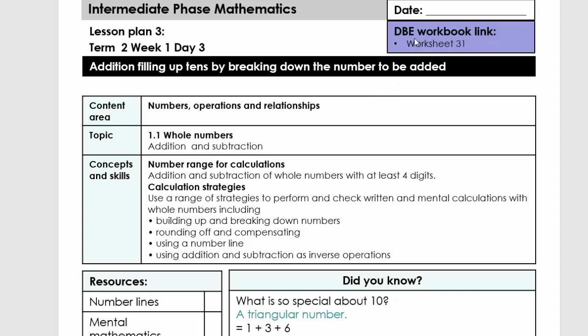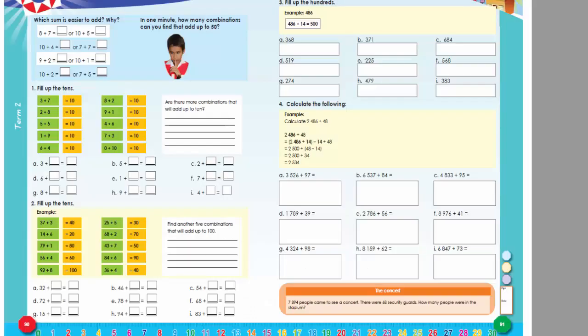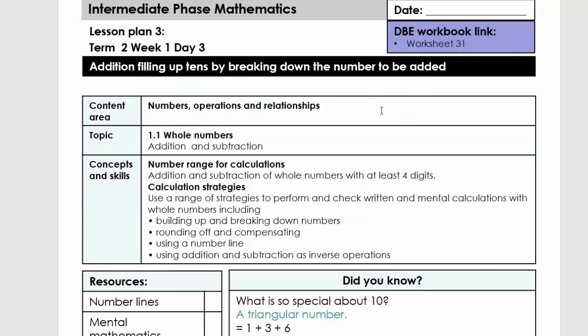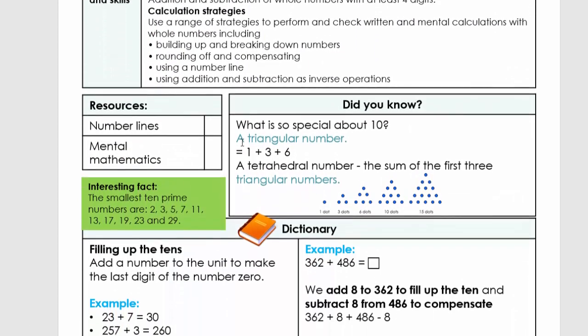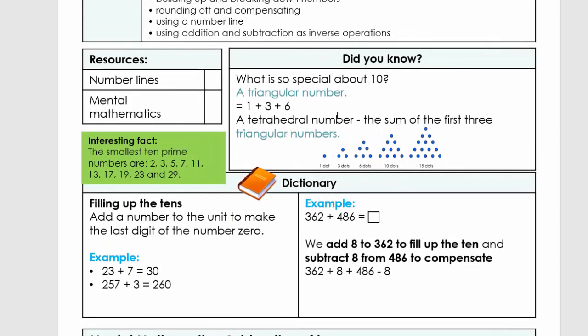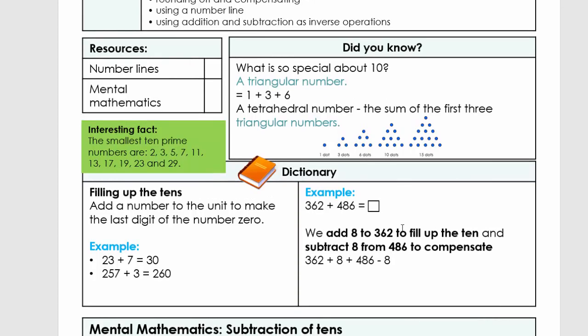It's also linked to the DBE worksheet number 31. This is worksheet number 31 with very nice activities there. Remember you can do this or the SAT worksheets, or both of them. Again, practice makes perfect. Then we have the link to the CAPS document. What we're going to do is scroll to this point where you can pause, then look at the resources. There are some very interesting 'did you know' questions, interesting facts, and obviously the dictionary. The dictionary explains what the words mean that we're going to use today. Remember, learners don't have to memorize these, you just need to understand it to help them understand the concept.